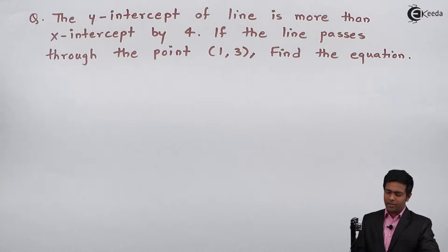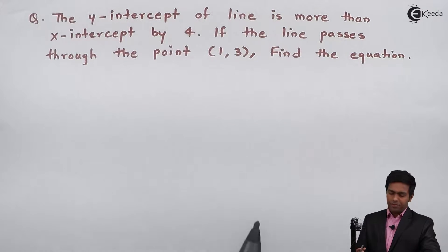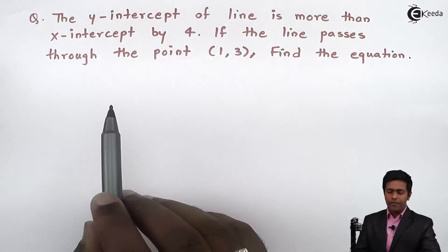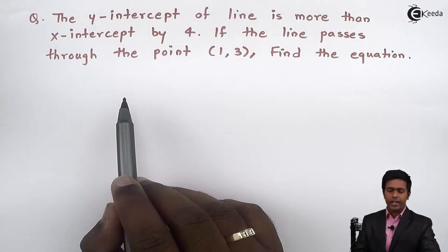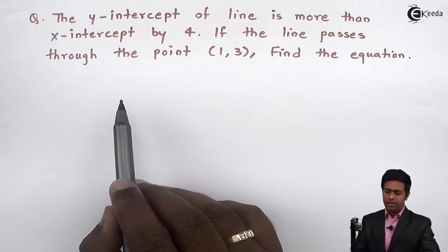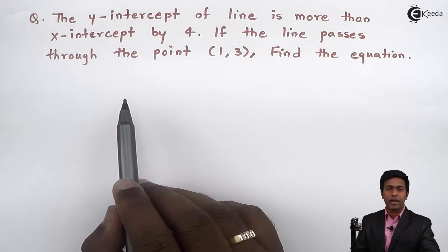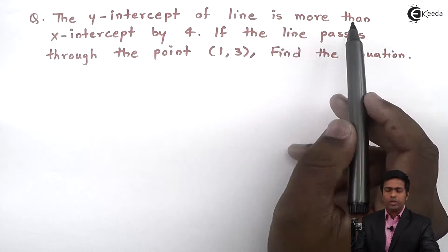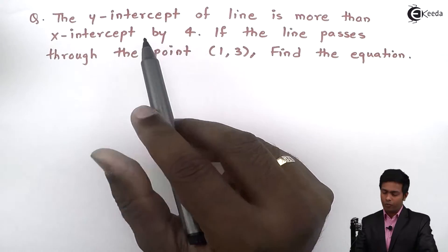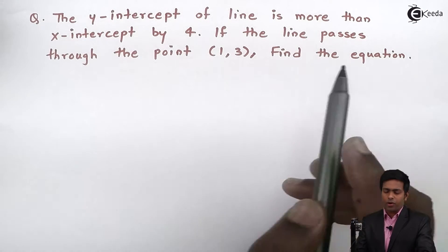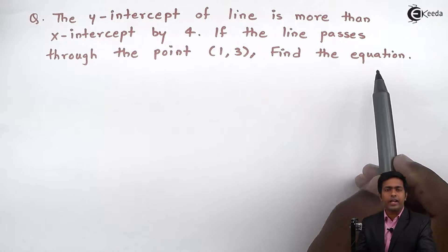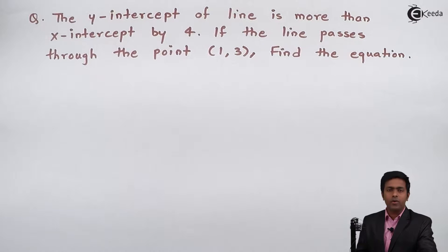Before starting, let us understand the given data. The y-intercept of the line is more than the x-intercept by 4. We don't know the exact x-intercept, but we have one relationship between x-intercept and y-intercept. Since we have this relationship, we can use the two-intercept form to find the equation of the line.